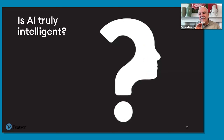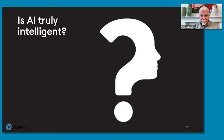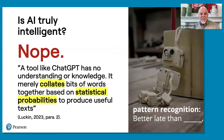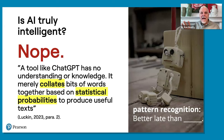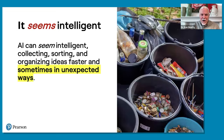The big question for us is: is artificial intelligence actually intelligent? Well, a tool like ChatGPT has no understanding and no knowledge. It merely collates bits of words together based on statistical probabilities. If I say 'better late than never,' the word 'never' is what most often comes up. But in conversation I could say 'better late than not at all' or something else. It looks for the most likely things based on reviewing hundreds of millions of examples available through the web. So it seems intelligent — it collects, sorts, and organizes ideas faster and in sometimes unexpected ways, and does a great job of that.